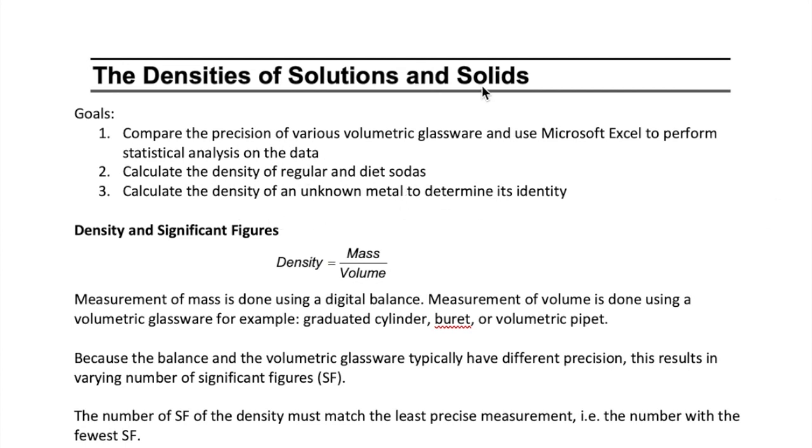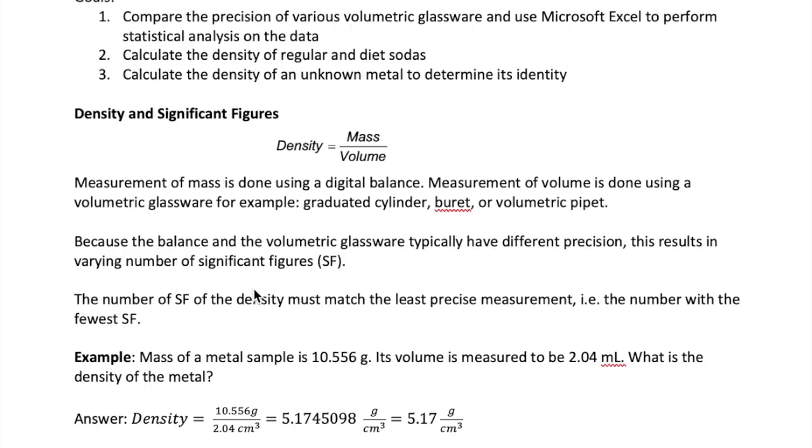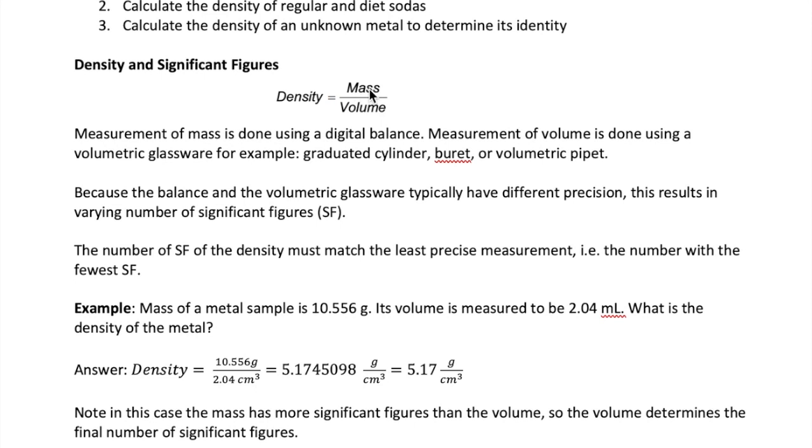In the first video, I will discuss just the first part of the lab. Let's start by reviewing the concept of density. Recall that density of a substance is just its mass divided by its volume. The mass is typically measured on a balance, while the volume is measured using some type of glassware, such as a graduated cylinder or burette. Because the precision of these instruments differ, the resulting measurements will have different number of significant figures. The resulting density must have the same number of significant figures as the less precise measurement.